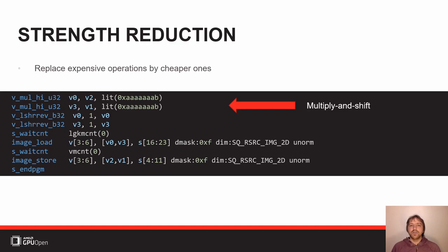So now you've seen SSA form, constant folding, common sub-expression elimination, global value numbering, strength reduction, and dead code elimination. These basic optimizations — which basically every compiler has — allow you to write your program in slightly higher-level terms without worrying too much about runtime performance at that very detailed level. There are more things one could talk about in the middle end, like loop transforms, but we're not going to go into that here.